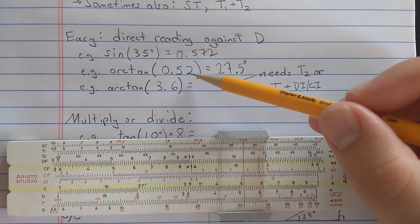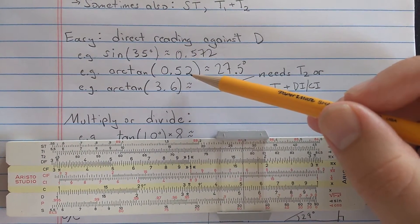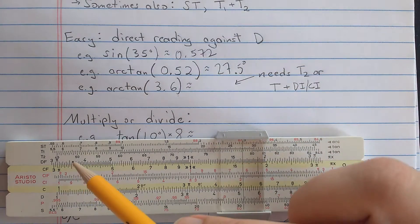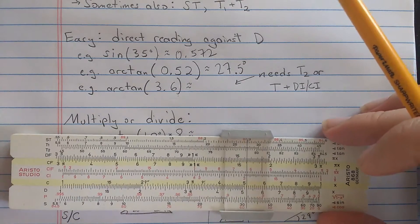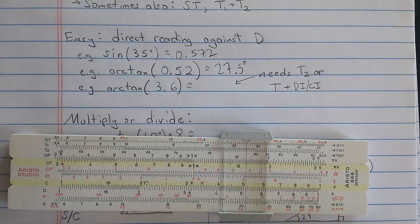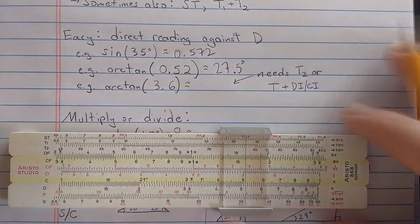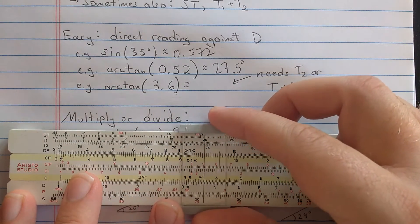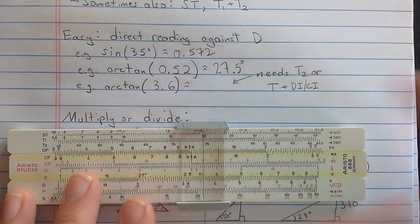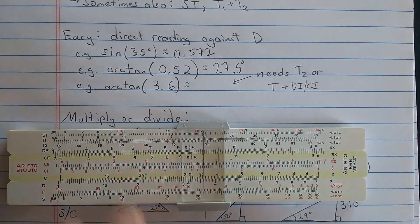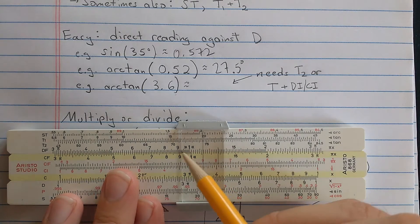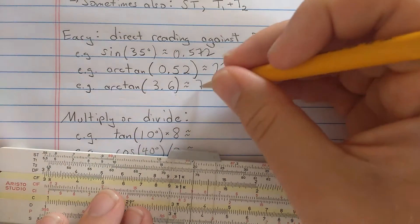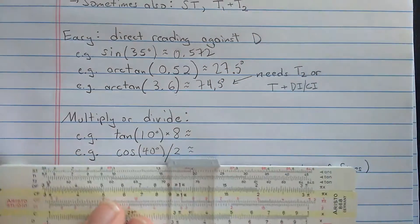Of course, that's for tangents between 0.1 and 1. For tangents between 1 and 10, you should use T2, or if you don't have T2, you're going to have to use an inverted scale, do a cotangent. But we have T2 here. So then I know I should read this on T2. And on T2, I read 71, 2, 3, 4, 74.5 degrees.